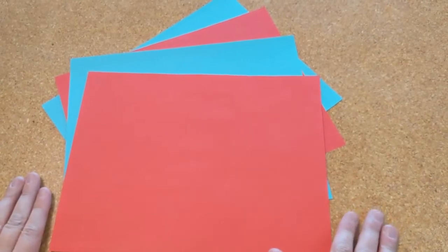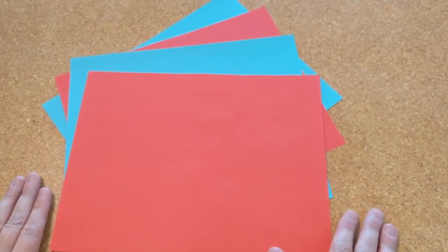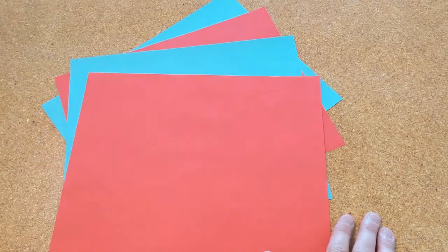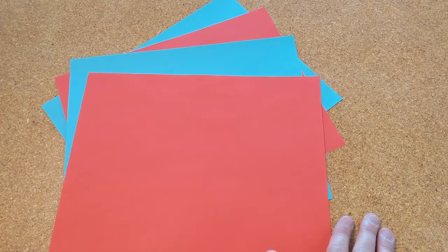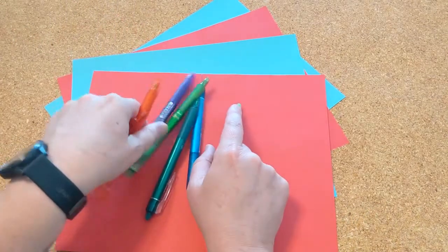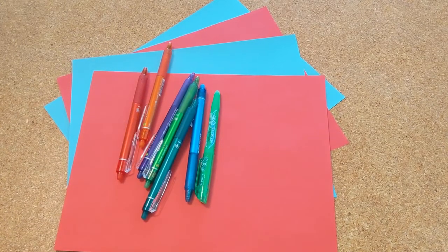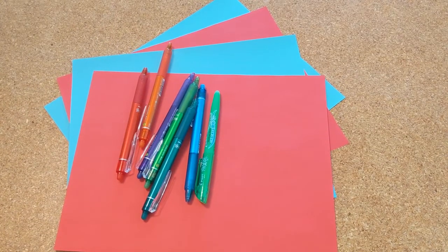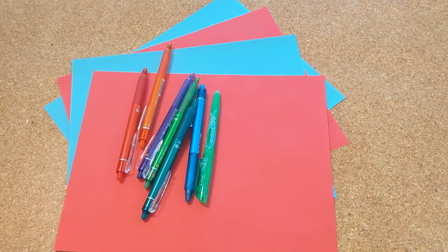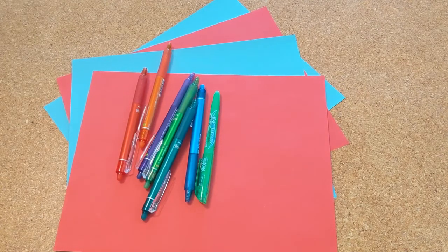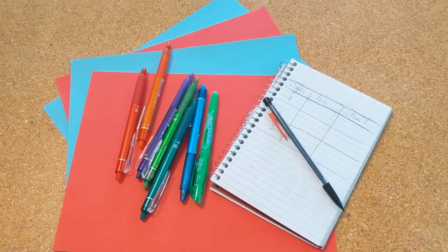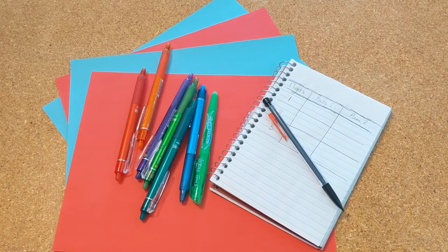For this project you will need two sheets of paper for each of your airplanes. I have four here just in case I make a mistake on my first one. You'll also need a variety of colors - you can use crayons or markers, colored pencils or pens - but if you want to decorate your plane you'll need those. And finally, when you're ready to test your airplanes you will want a notebook and a pencil so you can record all of your tests.